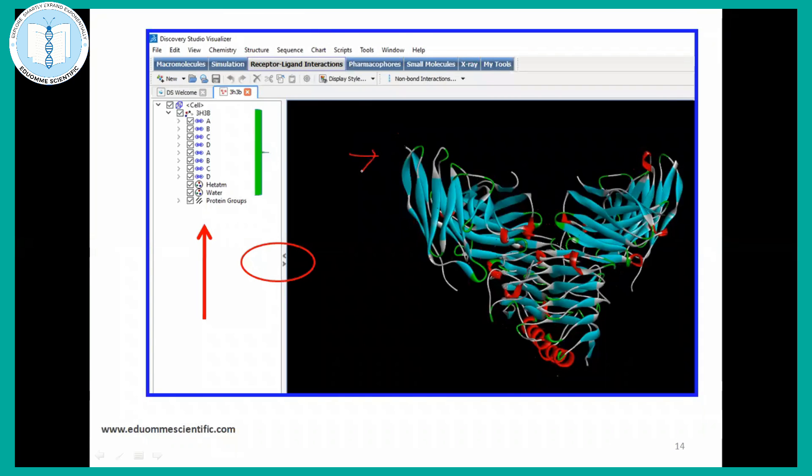Once your files are open, if you want to check the details about your protein molecule or other macromolecule, you just have to either click the control H or you can go to hierarchy and you can get the ideas about the chains. Here you can see A, B, C, D. There are four chains present in this protein molecule.